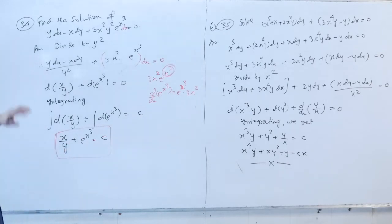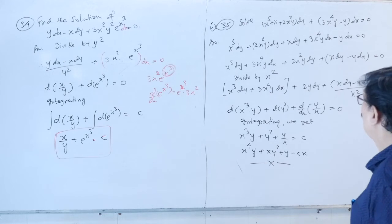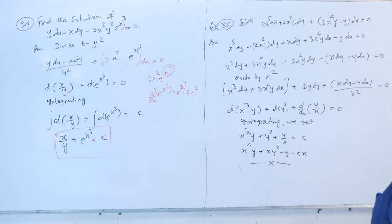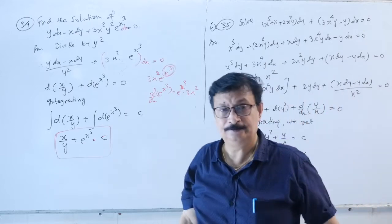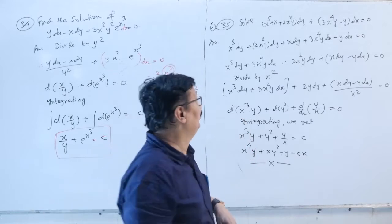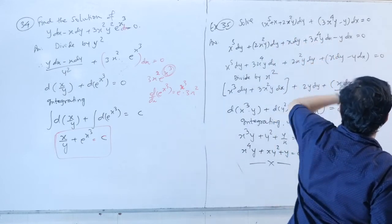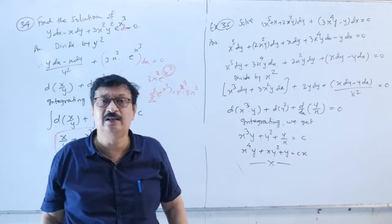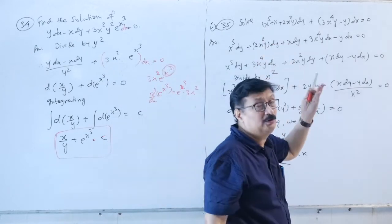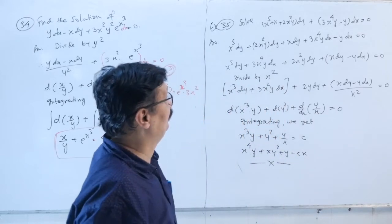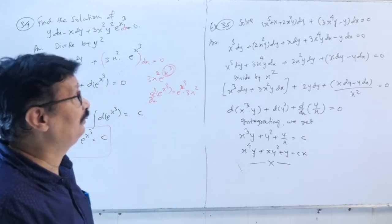Example 35: Solve x⁵·y·dy + x⁴·y·dy + 3x⁴·y·dx − y·dx = 0. This is not homogeneous, not variable separable, and not immediately linear. We check for linear in y or linear in x and consider using differential coefficients.